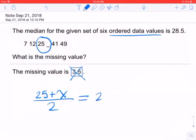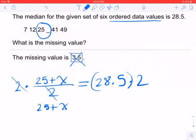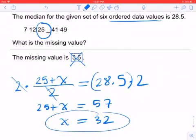Now from here we'll solve for x by multiplying both sides by 2. The 2s cancel, we get 25 plus x equals 57. Therefore we find our missing value—I believe it's 32. Let's see, 57... yep. And that's how you do it.